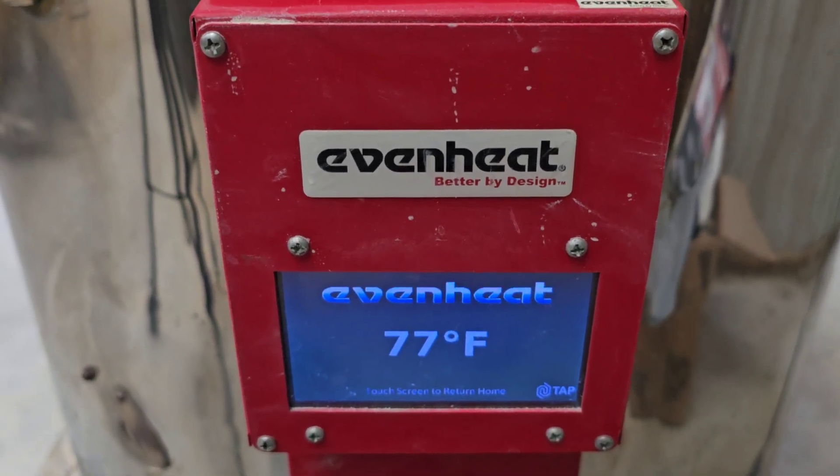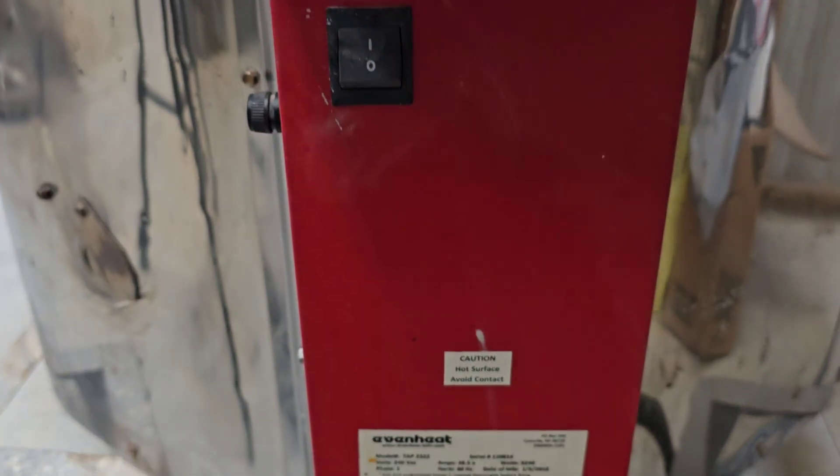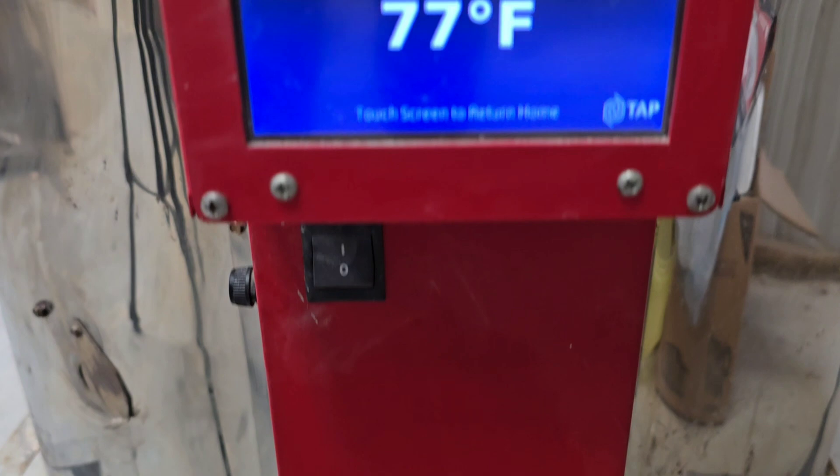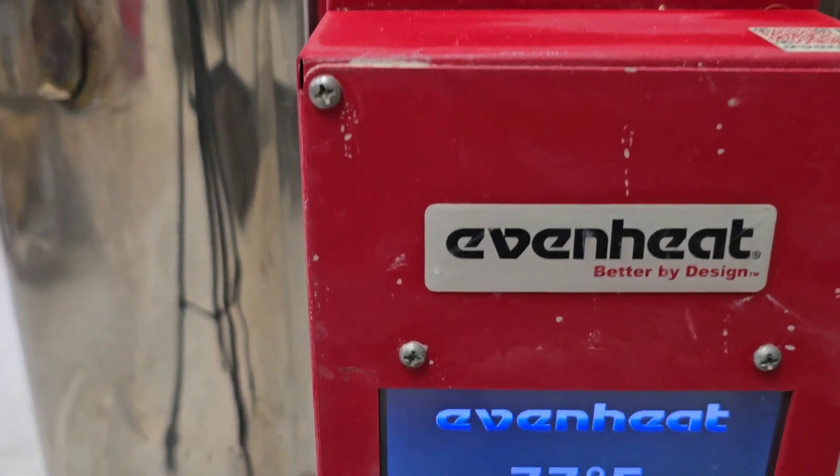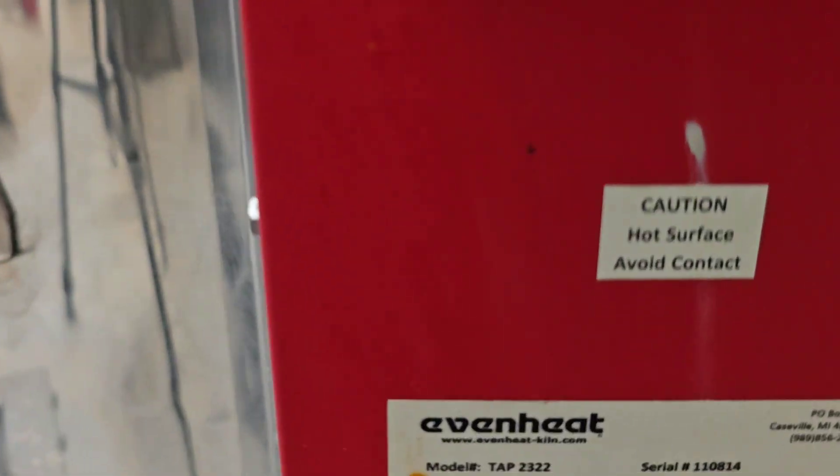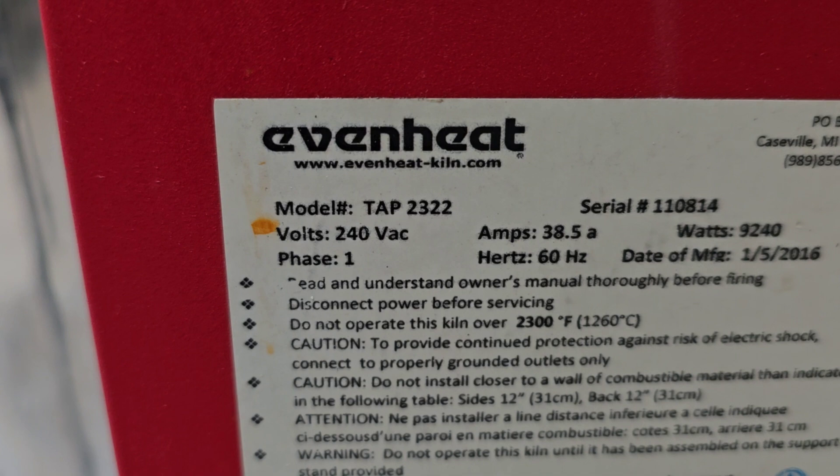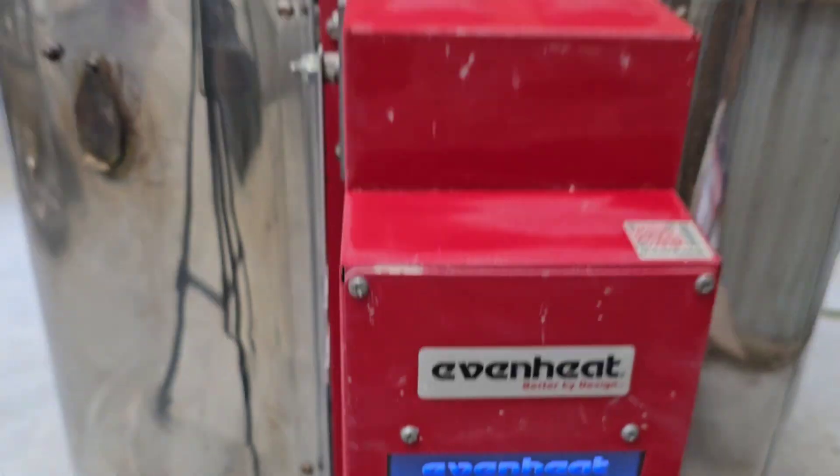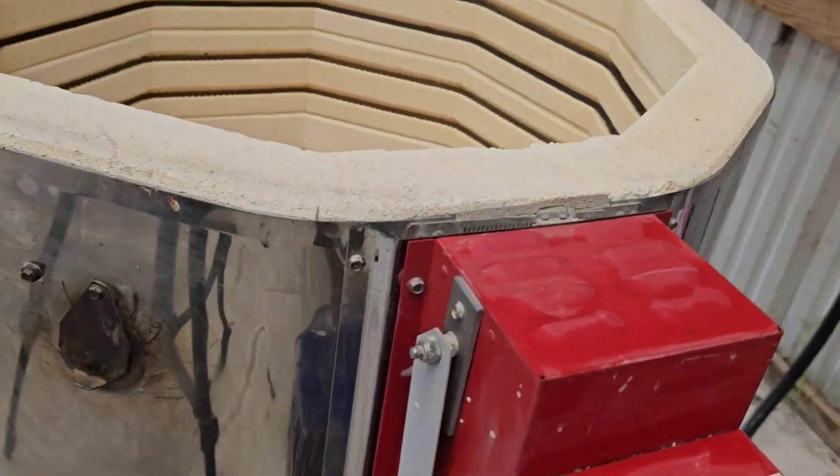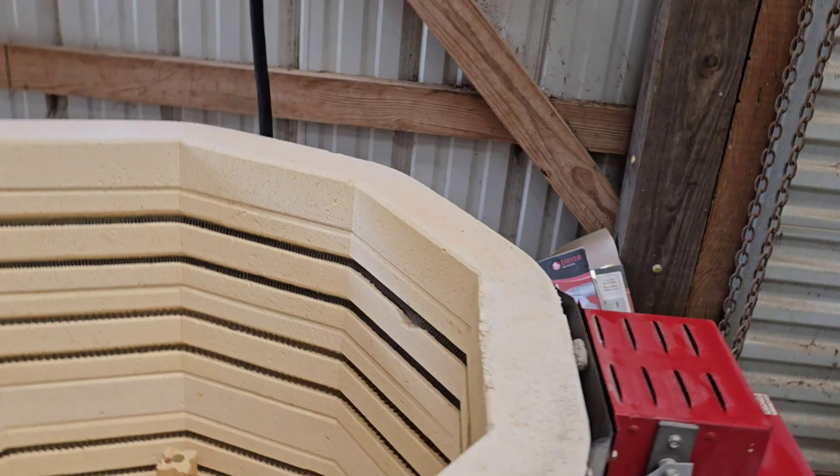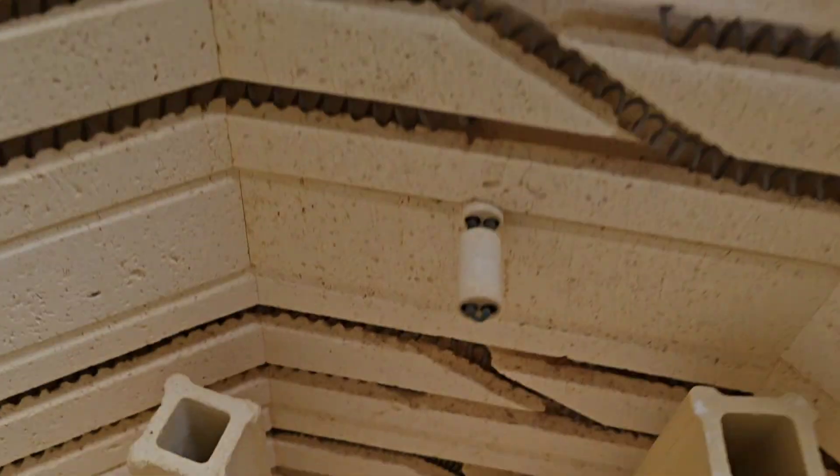Today we are going to talk about replacing the thermocouple on an even heat, and that is a TAP 2322. Now, it's not just going to be for the even heat. These same principles apply for a lot of different kilns.